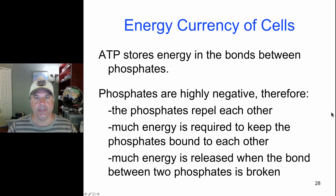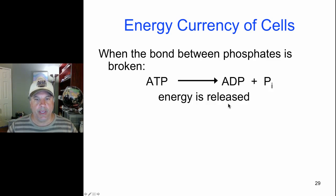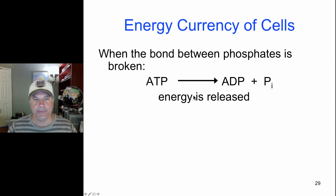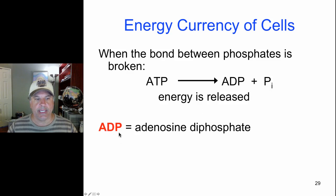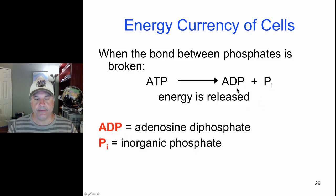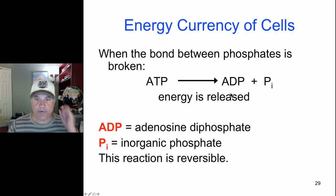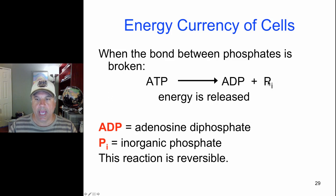We talk about energy release when we cleave those high energy phosphate bonds. This is our reaction when we're losing 1 phosphate — we call that an inorganic phosphate because it's no longer attached to an organic molecule. So ATP yields ADP plus inorganic phosphate. This reaction is reversible in that if we put energy in we can add a phosphate to ADP to yield ATP.